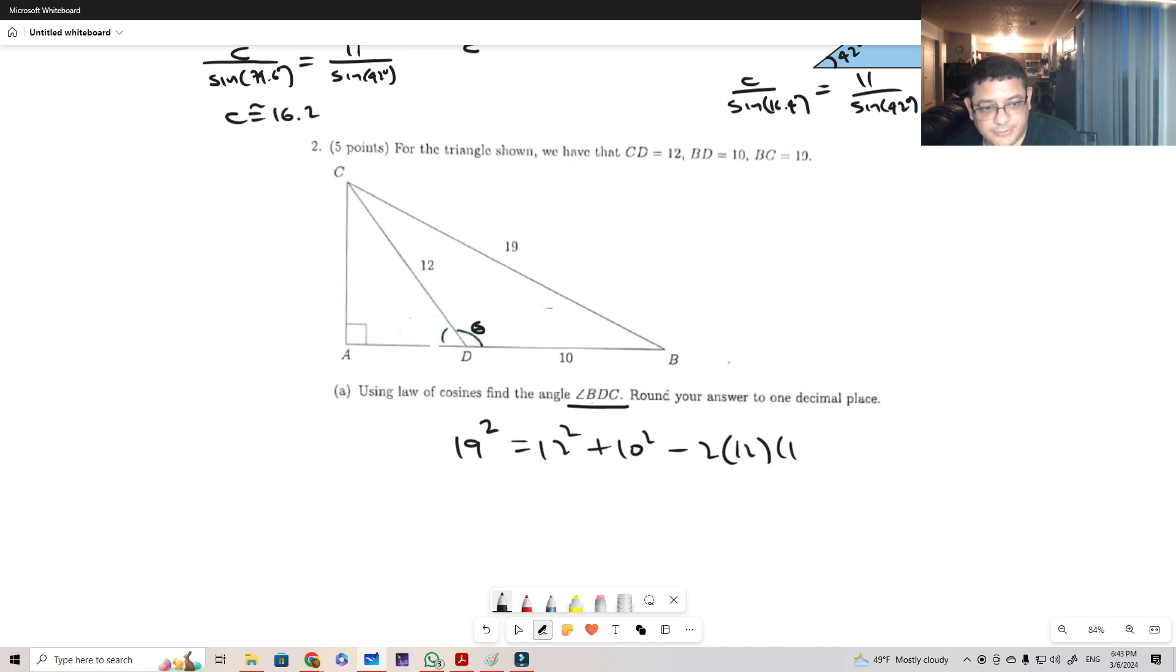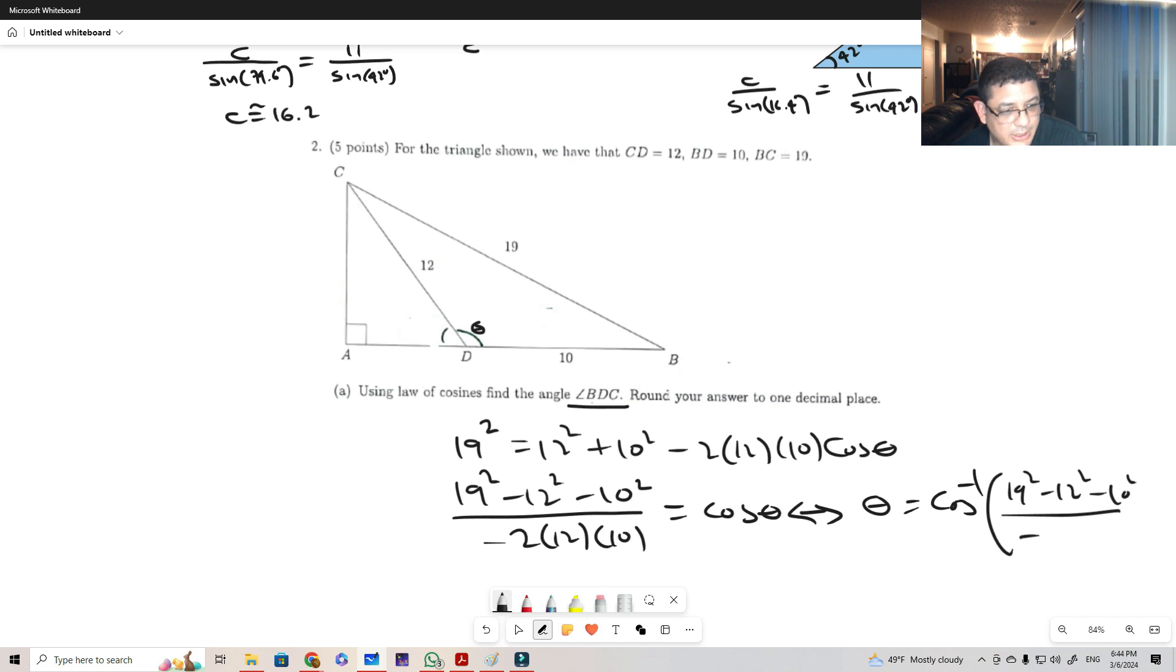Now I solve for cosine of theta initially, and this is going to give me this equals cosine of theta. Using that, I can just do theta is cosine inverse of this value. If you put that in your calculators, then you're going to find out that theta is 119.2.